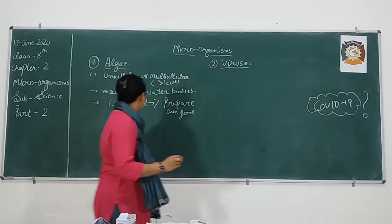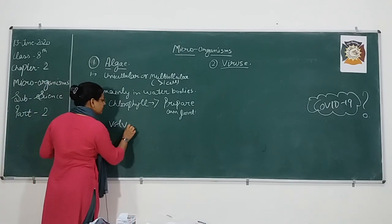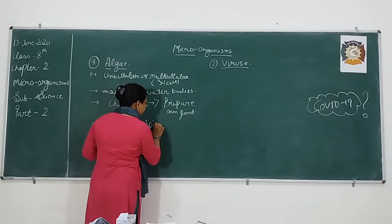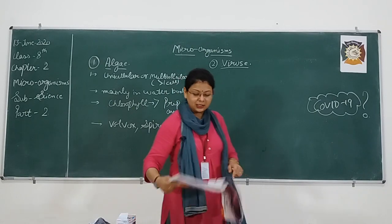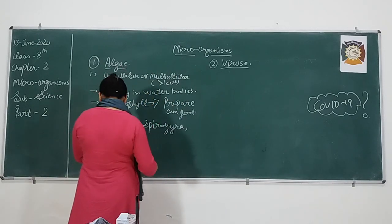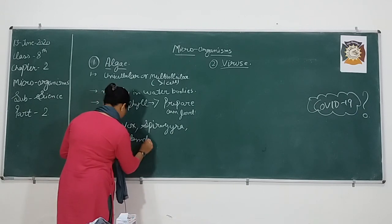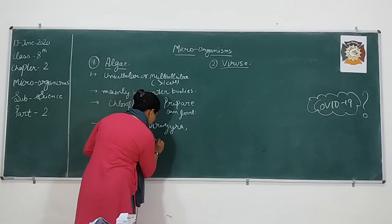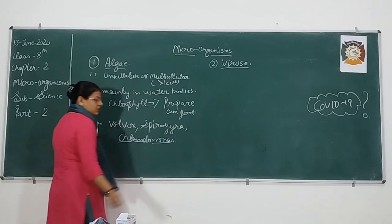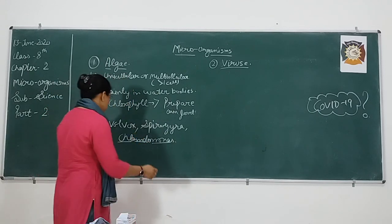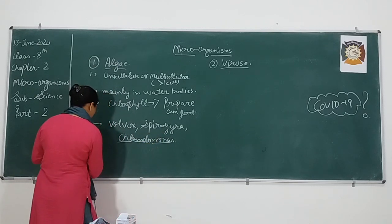Some examples of algae are Volvox, Spirogyra, and Chlamydomonas. The pronunciation should be correct — it is Chlamydomonas, Volvox, Spirogyra, and Chlamydomonas.